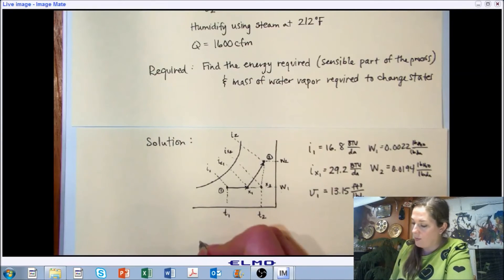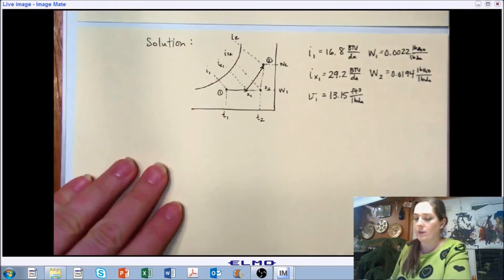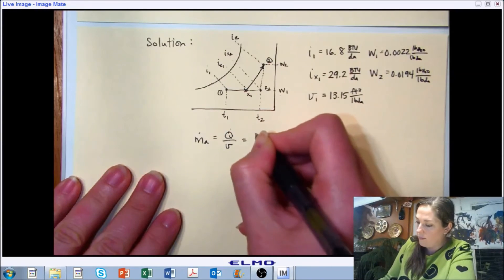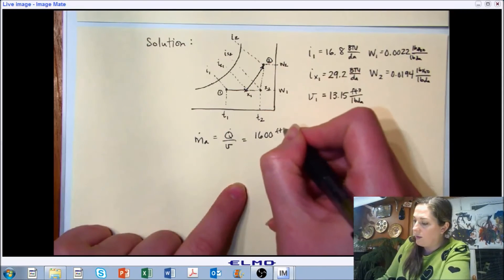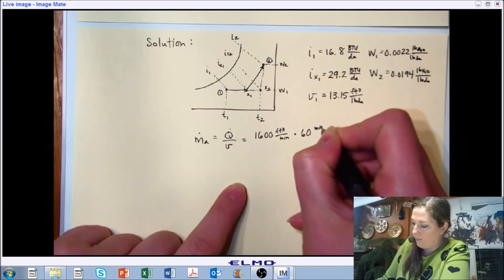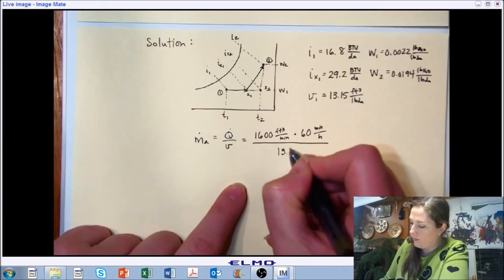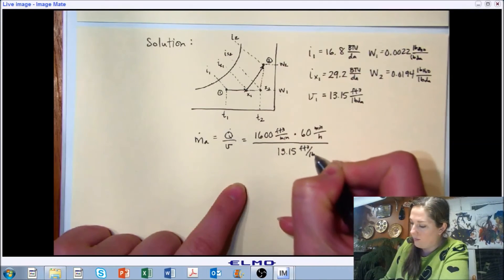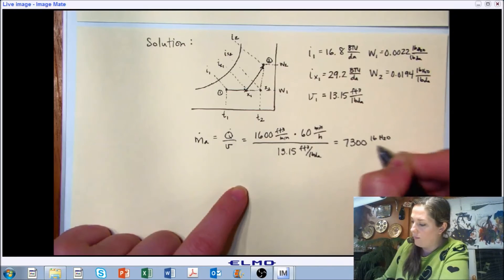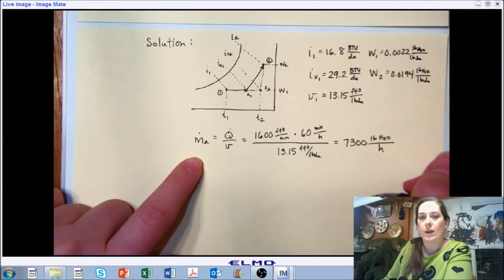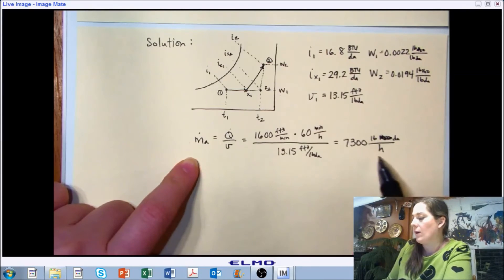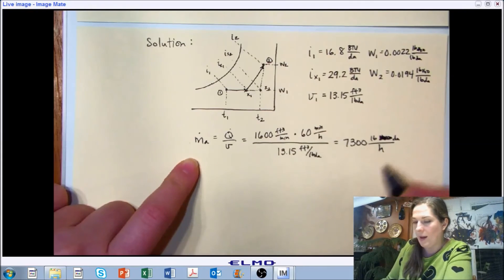I think with that we should have all the information we need to do our calculations to solve this problem. We're told that we have 1,600 cubic feet per minute. So if we solve, our mass flow rate of our air is 7,300 pounds of dry air. And I apologize for my error there. Pounds of dry air per hour.